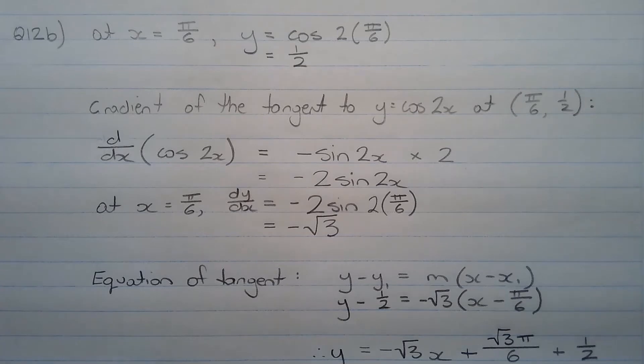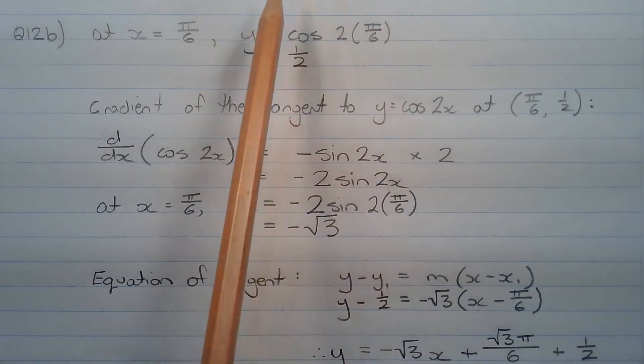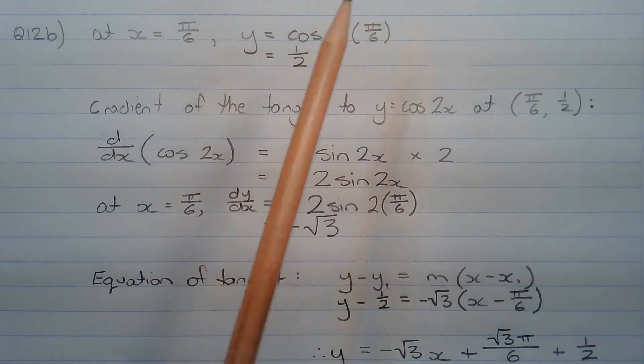The first step is to find the y coordinate at x equals pi over 6. So at x equals pi over 6, y equals cos of 2 times pi over 6, which equals half. Just make sure the calculator is set to radians before you work this out.